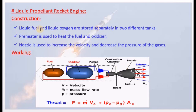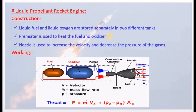Liquid fuel and liquid oxygen are stored separately in two different tanks. The liquid propellant is stored in two different tanks. A pre-heater is used to heat the fuel and oxidizer to a suitable temperature.